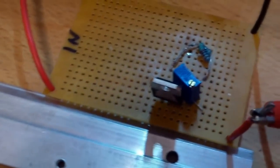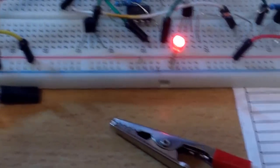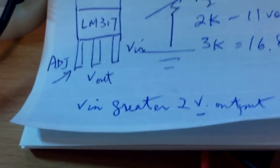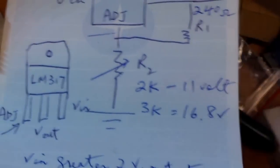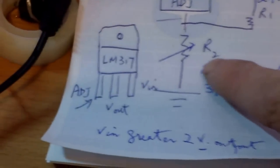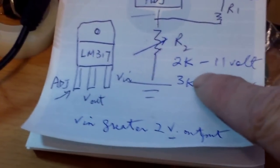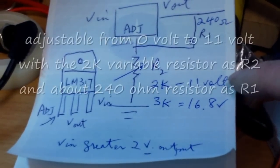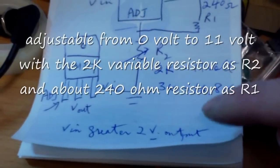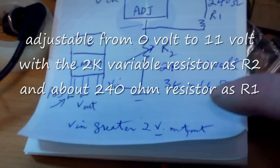The resistor that I use over here, R1, is about 240 ohms, and R2 is a variable resistor. I used a 2k, so the voltage only went up to 11 volts.